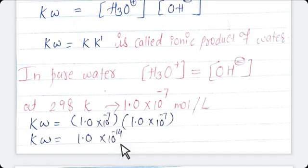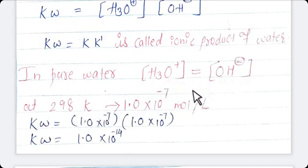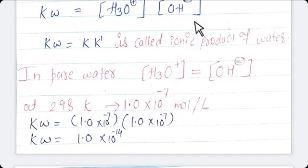For pure water, hydrogen ion concentration equals hydroxyl ion concentration, and at 298 Kelvin the value is 1.0×10⁻⁷ mol per liter. Putting this value in the formula, we get KW = 1.0×10⁻¹⁴. This is nothing but auto ionization of water.